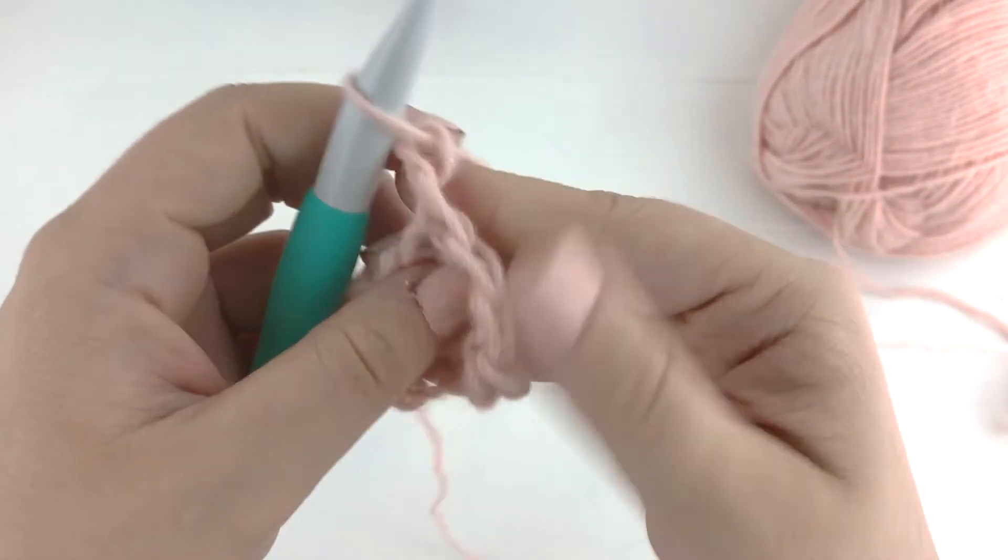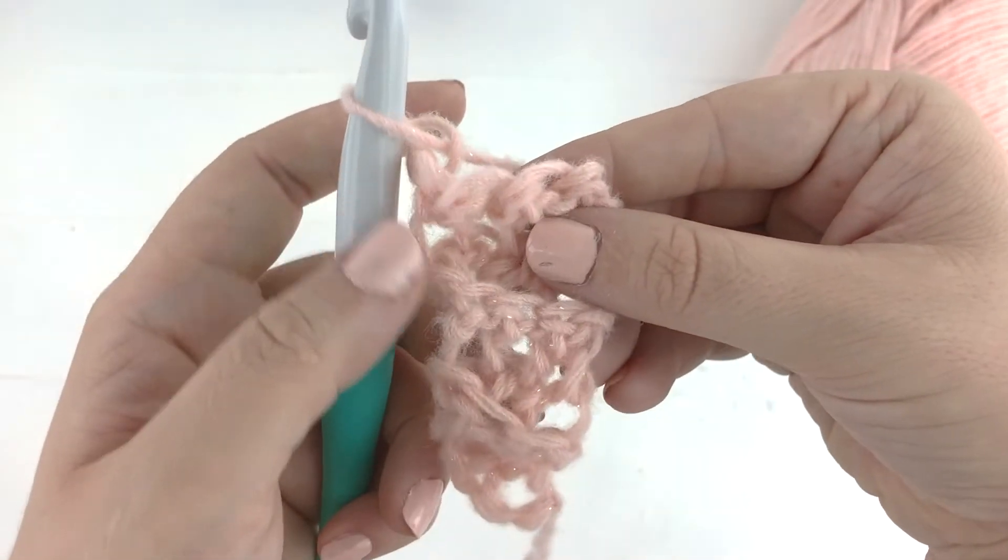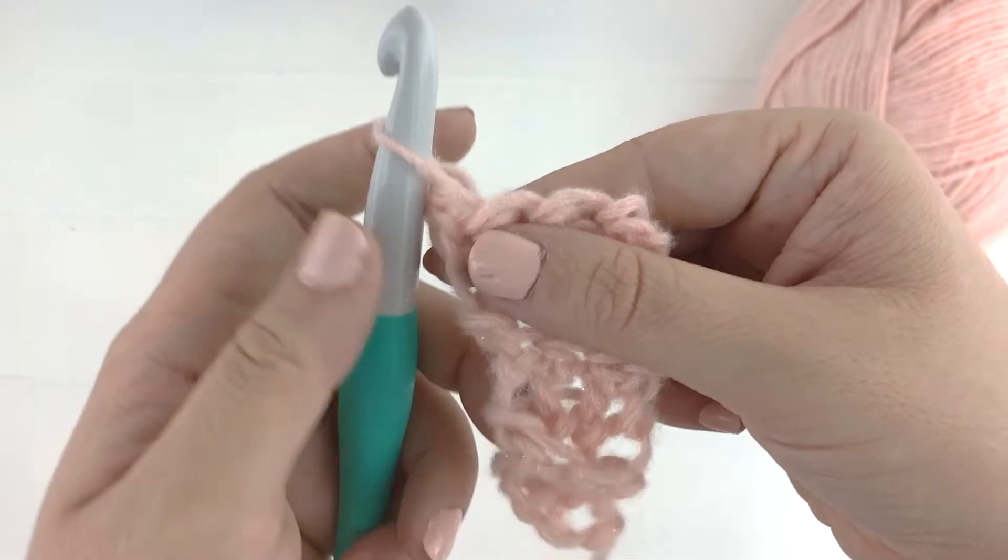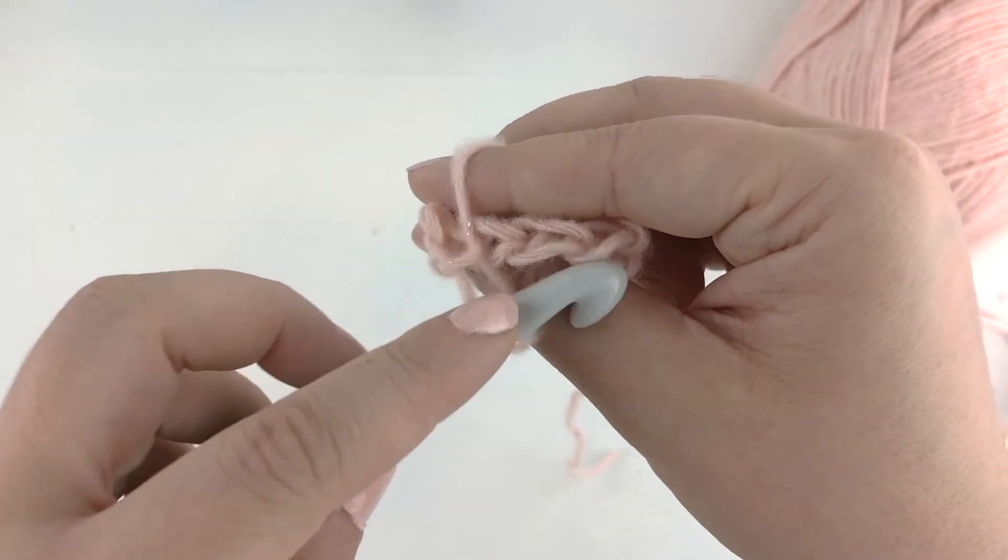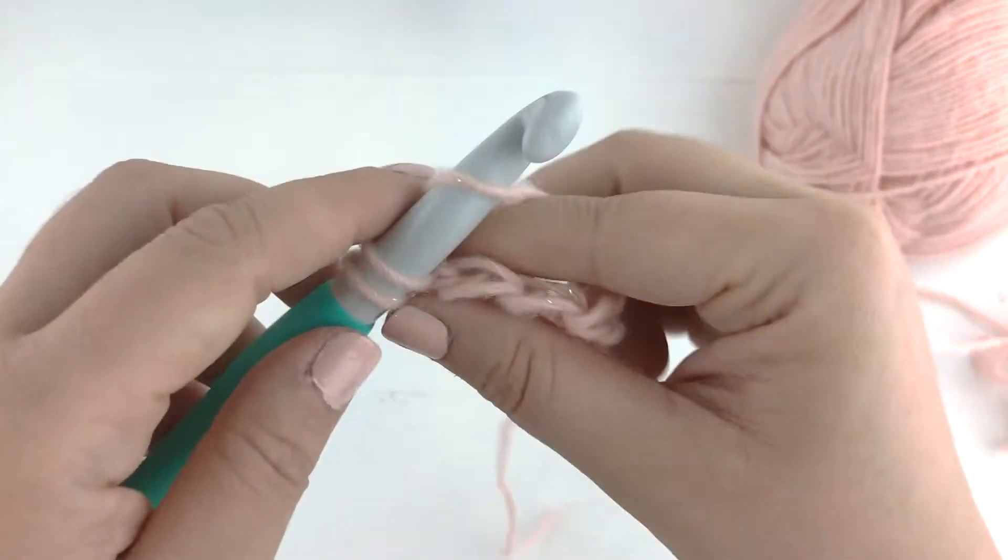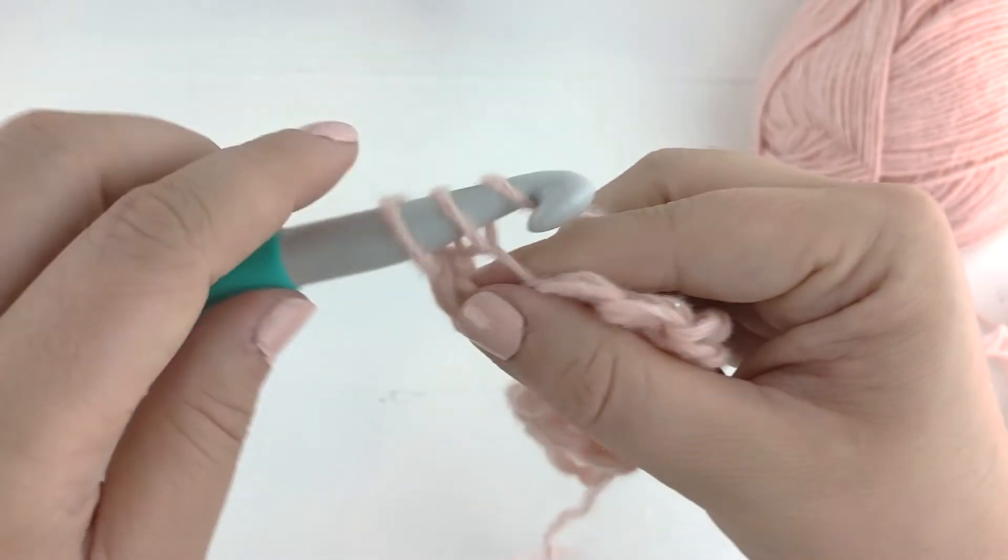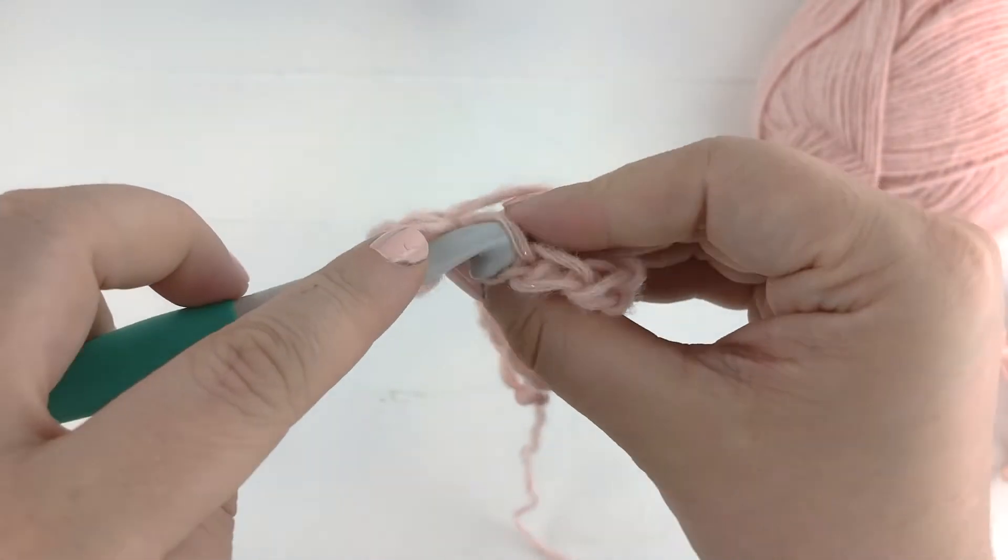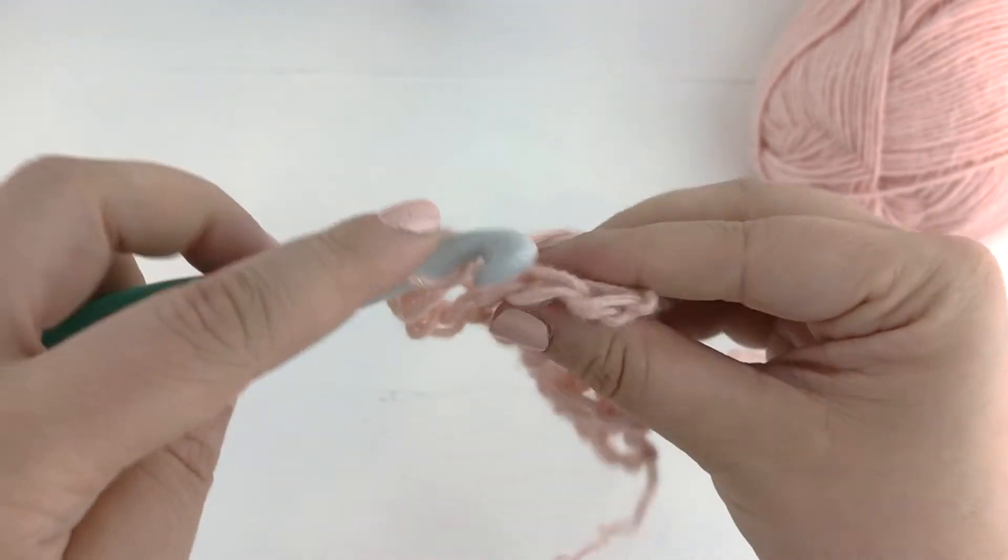So we'll chain one for row seven. You'll see that one side is going to stay straight, the other side you're going to slant. If you lose count of your rows, know that on the slanted side is when you start with an increase. If your row starts on that straight side then you're simply single crocheting across.